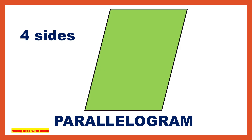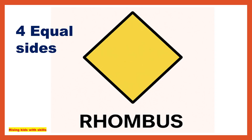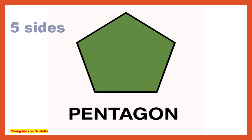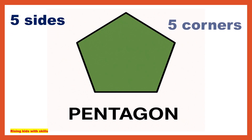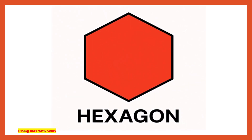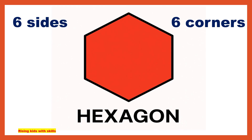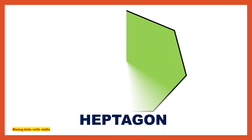Our favourite — parallelogram. It has four sides where opposite sides are equal and parallel. This is called a rhombus. It has four equal sides but it is slanted like a diamond. This is called a pentagon. It has five sides and five corners.